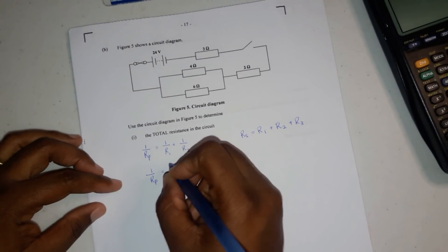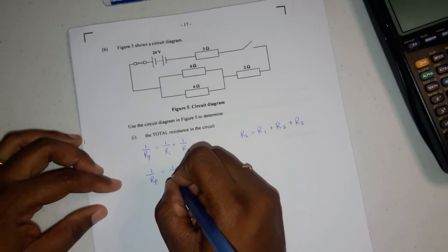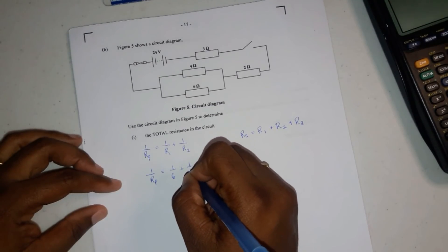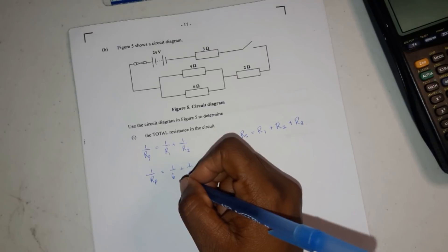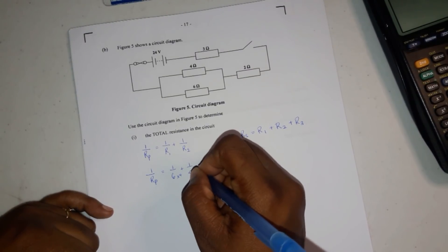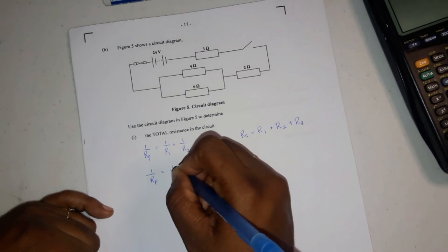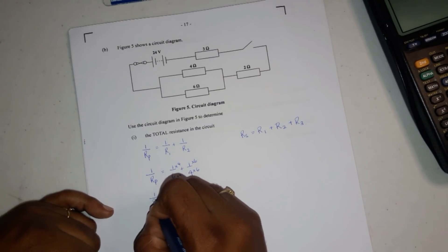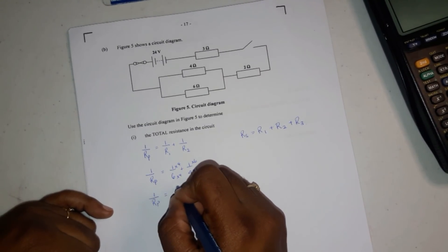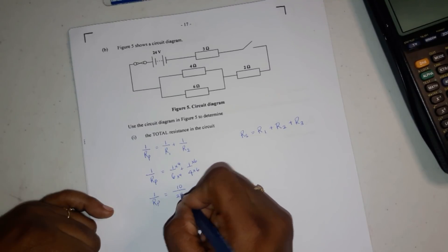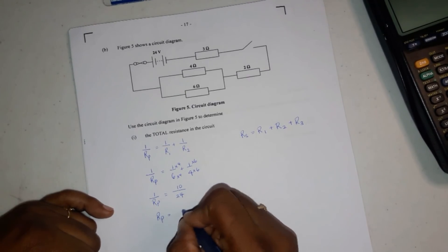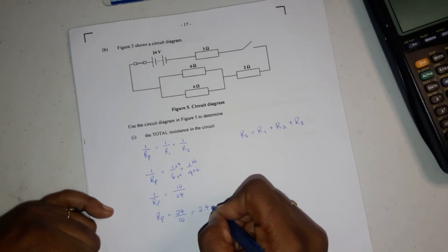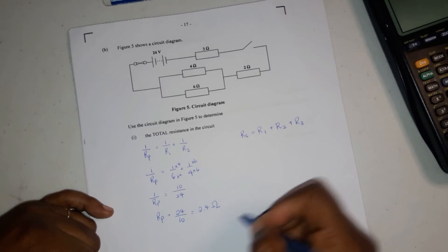1 over Rp equals 1 over 6 plus 1 over 4. You find the common denominator for both, and then what you do to the bottom, you do the same to the top. So you're going to have 1 over Rp equals 10 over 24. Transpose, Rp will equal 24 over 10, and that will give you 2.4 ohms.